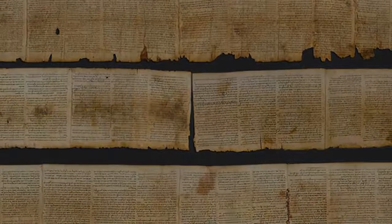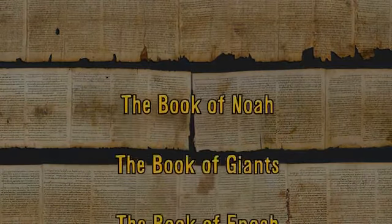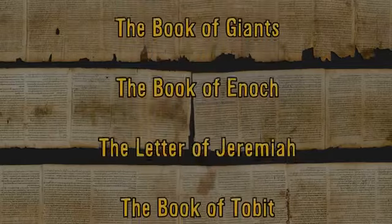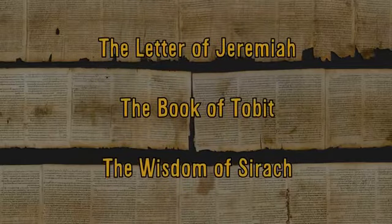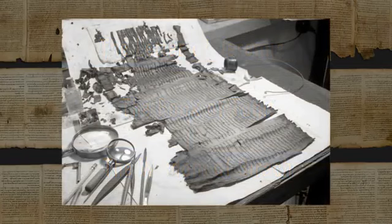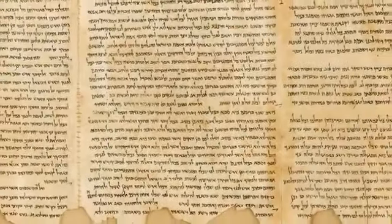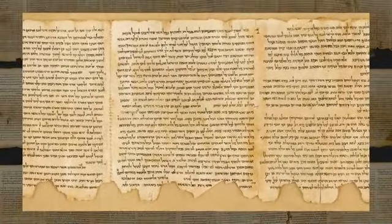When the Dead Sea Scrolls — some of our oldest copies of the books of the Old Testament — were discovered by chance in a remote desert cave in what was then Jordan, it was somewhat uncomfortable to find that intermixed with these documents were books that no average Christian or Jew in the modern day had ever even seen before: the Book of Noah, the Book of Giants, the Book of Enoch, the Letter of Jeremiah, the Book of Tobit, the Wisdom of Sirach. All of these are books omitted by the canon of most sects of Judaism and Christianity today, but they appear to have been deemed just as important to the ancient Jews as canonical texts like Genesis, Samuel, and Isaiah.